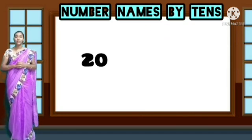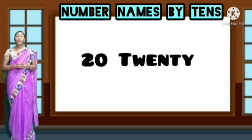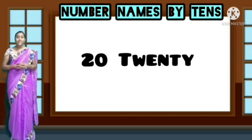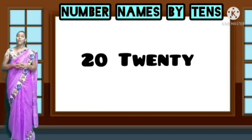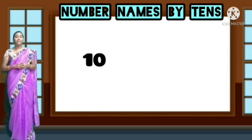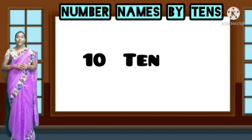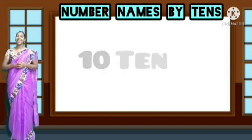Now look at the question: what is the number name? It is two, zero. What is the number name of this number? Two, zero — twenty. And the spelling of twenty? T-W-E-N-T-Y, twenty. Now the next one: one, zero. What is the name of this number? It is ten. The spelling is T-E-N, ten. One, zero, ten.